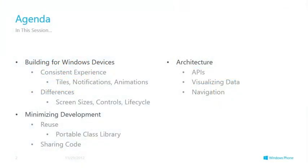There are three areas in this particular topic. First of all, we're going to look at building for Windows devices. We're going to focus on getting developers to think about the application they're building and considering the common elements such as tiles, notifications, use of grids and content rather than Chrome, the design language, but also how to respect the differences such as grid views and list views versus list pickers and long list selectors. We'll have a look at the different screen sizes and the impact that has.